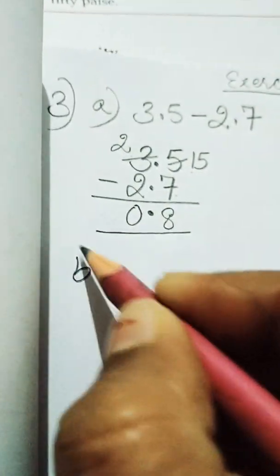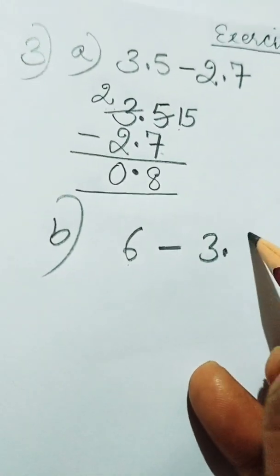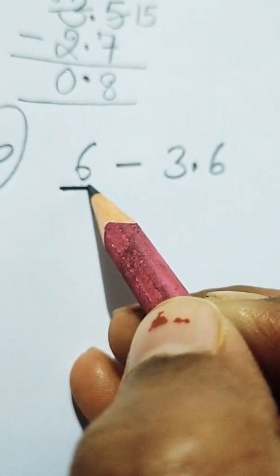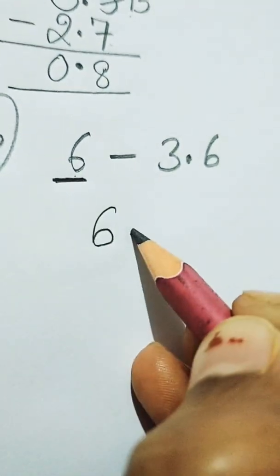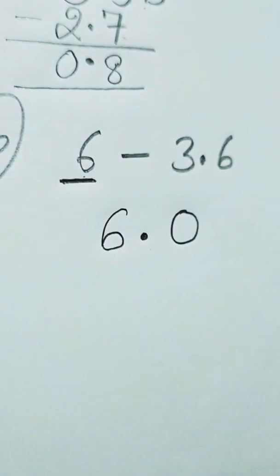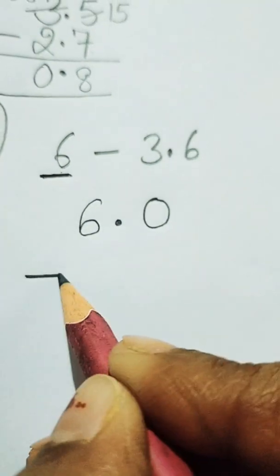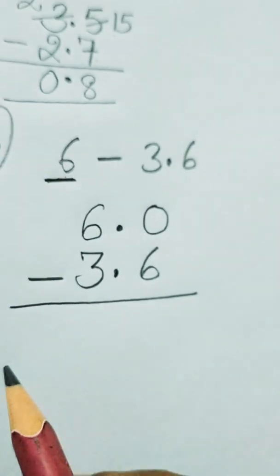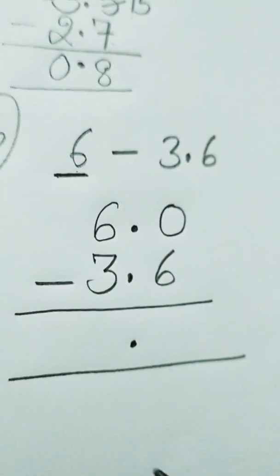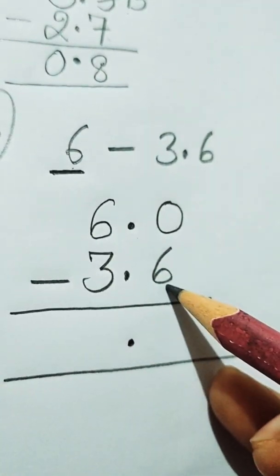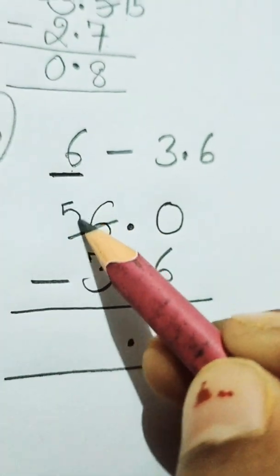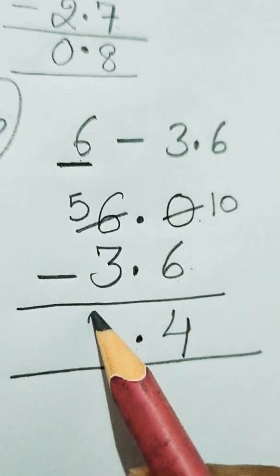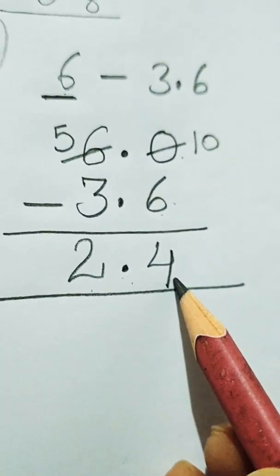In B part, the statement is 6 minus 3.6. Here 6 is the whole part only — there is no decimal part. So we convert it: 6 means 6.0. So it becomes 6.0 minus 3.6. We find the difference — here is the decimal. 0 minus 6 is not possible, so we borrow: it becomes 5 here and 10 here. 10 minus 6 is 4, then decimal, then 5 minus 3 is 2. So the answer is 2.4.